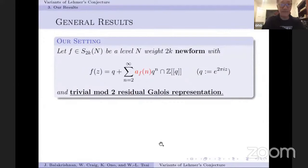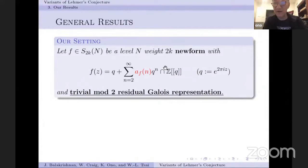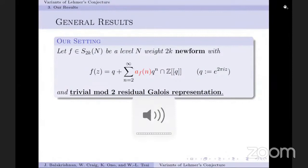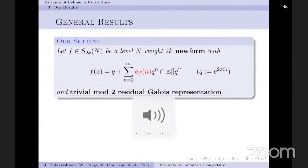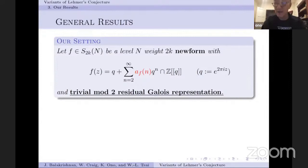The general results are the following. If F is an even weight newform with level N and integer coefficients — and this integrality is important; these theorems are not easy to generalize to eigenforms with ordinary algebraic integer coefficients — our theorems require ordinary integer coefficients. They also require a trivial or residually reducible mod-2 Galois representation. When I talk about residually reducible mod 2, I mean that the representation into GL₂ has at least a one-dimensional fixed space that splits off when you take the residue class representation.